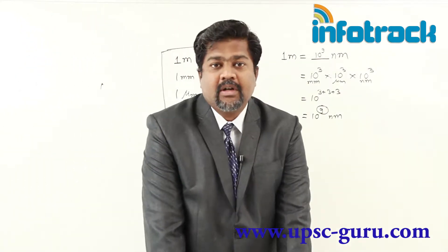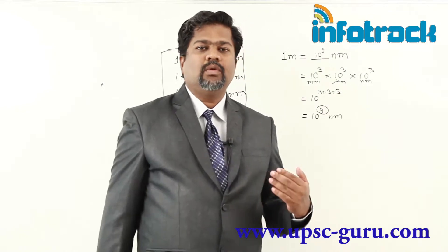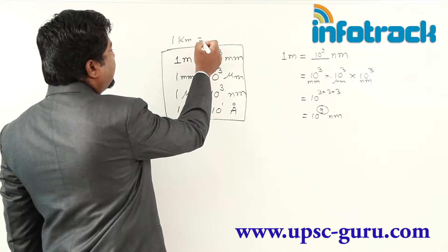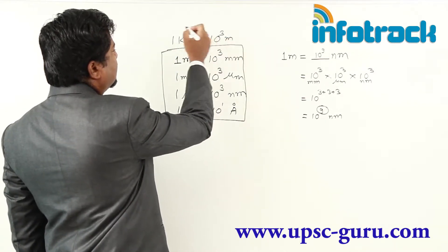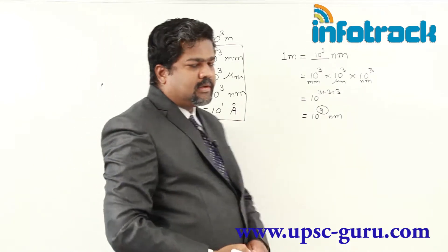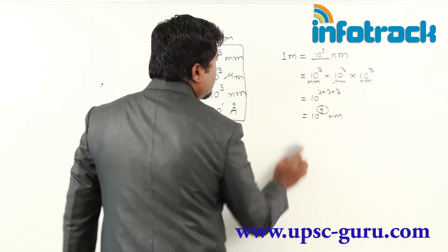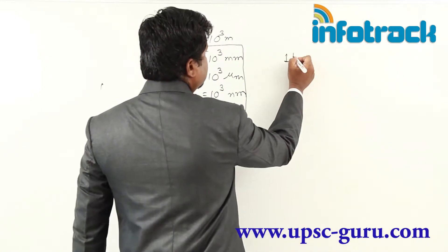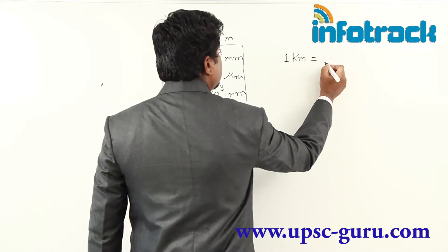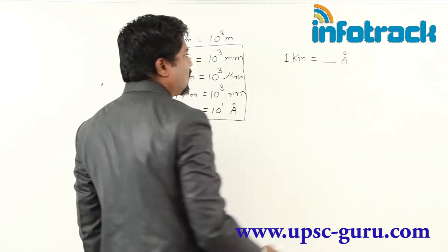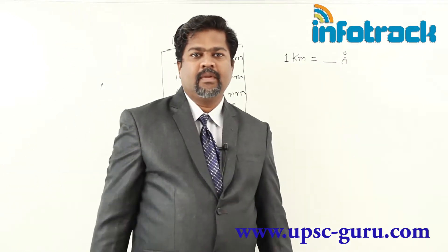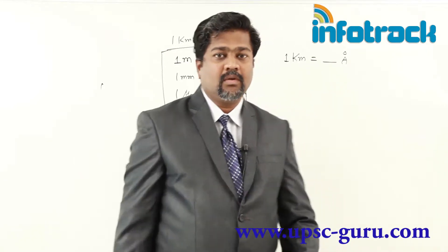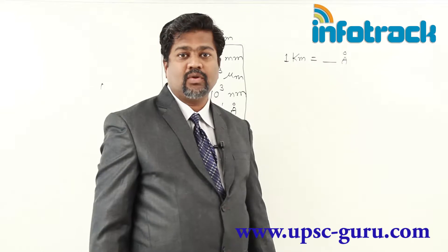This way we convert upper units to lower units. Now I am writing an upper unit: 1 kilometer equals 10 raised to 3 meters. So you can solve one more sum: 1 kilometer equals how many angstroms? Try to solve this yourself. From my side, it is 10 raised to 3 meters, into 10 raised to 3 for millimeters, into 10 raised to 3 for micrometers, first meter, millimeter, micrometer.